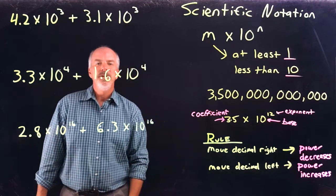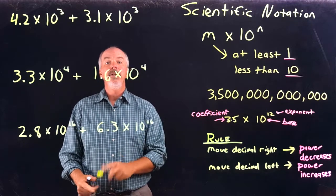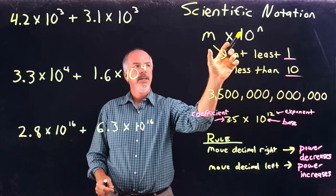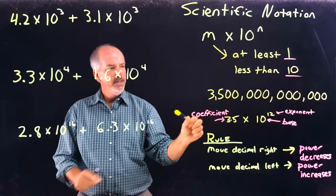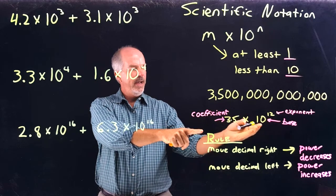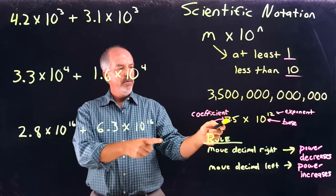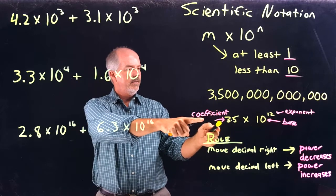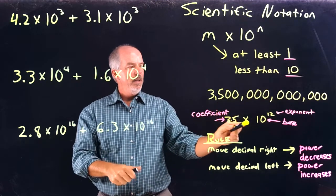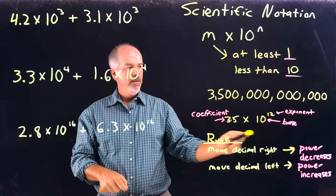Okay, hello. This video is on adding in scientific notation. A quick review of what we learned in our introduction to scientific notation: M times 10 to the n is how we write in scientific notation. It's a way to write a very large number in shorthand. It has two factors — the first factor is the coefficient, which must have a value of at least one but less than 10, and it's multiplied by a base of 10 to an exponent.